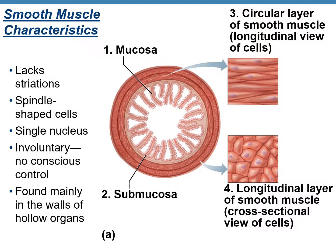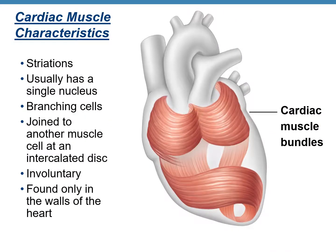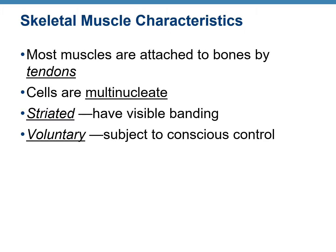To recap: smooth muscles are spindle-shaped, uninucleate, and lack striations. Cardiac muscles are branched with intercalated discs; they are uninucleate, striated, and involuntary. Skeletal muscles are cylindrical and multinucleate; they are attached to the bones by means of special connective tissue called tendons, and they are voluntary — meaning they are under your conscious control.